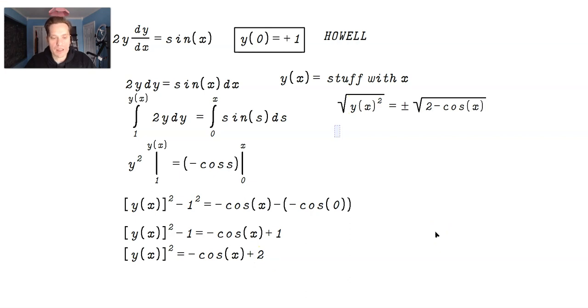On the left side, they will cancel, so you have y(x), and you've got to take the positive because y(0) = 1, not -1. So you're going to have y(x) = +√(2 - cos(x)), and this is the solution.